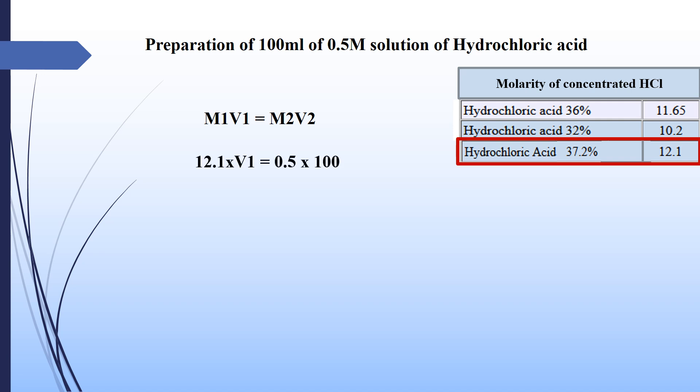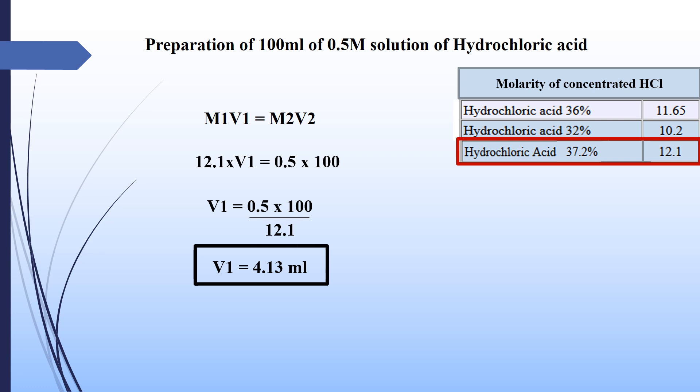Leave V1 as it is. Put M2 = 0.5, as it is the given molarity. Put 100 in V2, as we want to prepare 100 milliliters of 0.5 molar solution. After calculations, you get a volume of 4.13 milliliters.